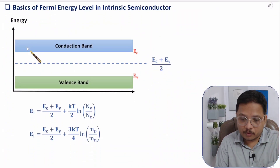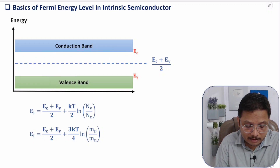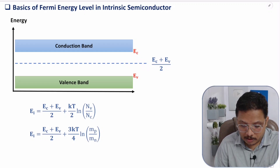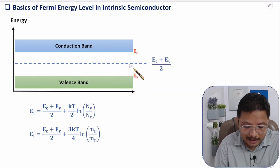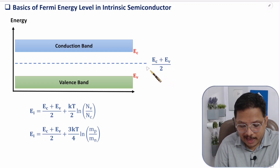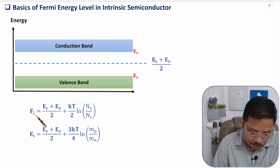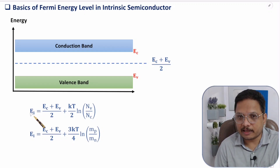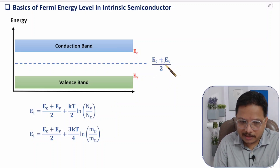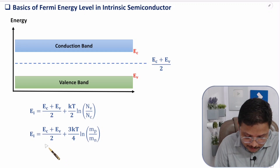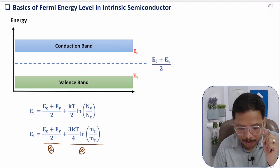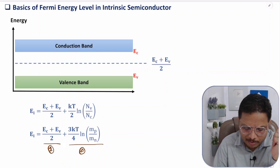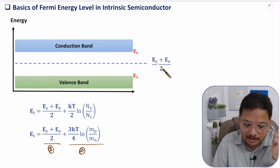If you observe the energy band diagram: we have the conduction band and valence band. The bottom edge of the conduction band has energy Ec, and the top edge of the valence band has energy Ev. The center line is Ec plus Ev divided by 2. When it comes to the Fermi energy level of intrinsic semiconductor material, that value is very near to this center line, because the second component of the equation is relatively very small compared to the first component. So in majority of cases, the Fermi energy level is approximately Ec plus Ev divided by 2.